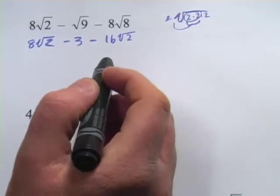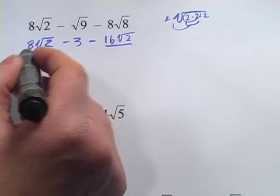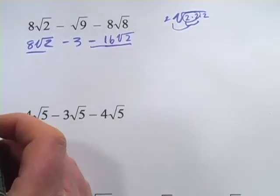Now, what we have is something that you should think of as like terms. We have 16 times the square root of 2 and 8 times the square root of 2. Actually, this is a negative 16 times the square root of 2.